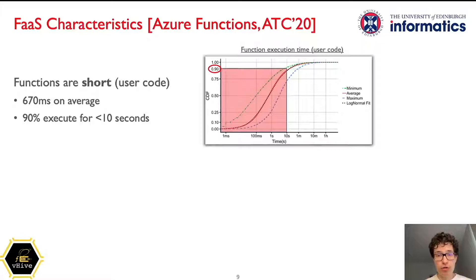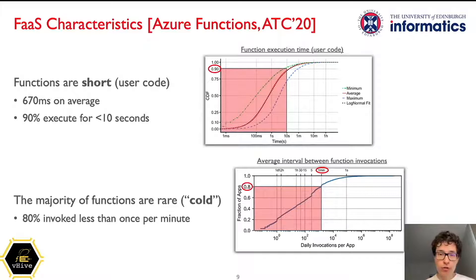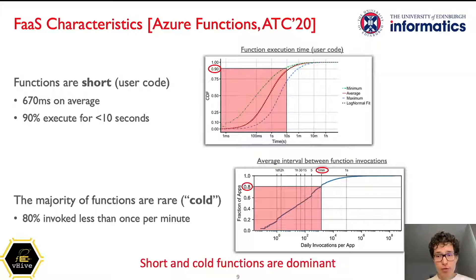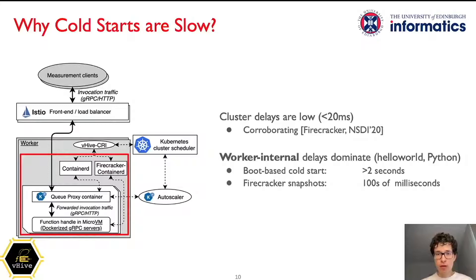This chart from a recent study by Azure Functions shows function execution time on the horizontal axis — note that the horizontal axis is logarithmic. The vertical axis shows the cumulative distribution of functions. Clearly, the vast majority of functions run for just 100 milliseconds to a few seconds in duration. The second chart shows the frequency of invocation on the horizontal axis and the cumulative distribution of Azure serverless applications. We can see that most functions are cold — 80% of functions are invoked less frequently than once per minute. To sum up, this is bad news for the providers, as most functions are short and cold, challenging the infrastructure the most.